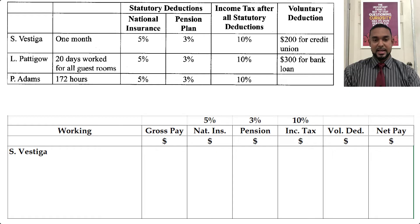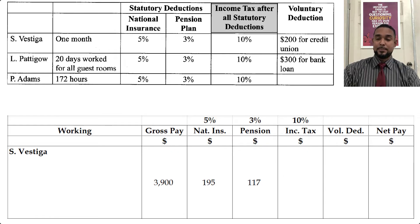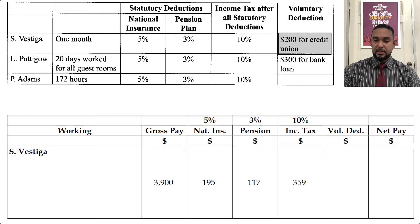Starting with S. Vestiger: gross pay is $3,900. National insurance is 5% of that — $195. Pension is 3% of $3,900 — $117. Income tax is 10% after statutory deductions, so you take $3,900, subtract both $195 and $117, then find 10% of that — this gives a figure that needs to be rounded off. The voluntary deduction for S. Vestiger is $200. Net pay is $3,900 minus these four items, giving us $3,029.